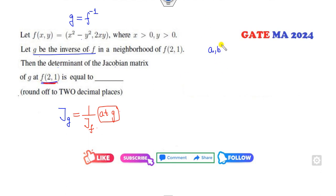I can find 2, 1 directly from here, but there is no need. What is F inverse of A, B? That is my 2, 1. And what is my F inverse? F inverse is my G.